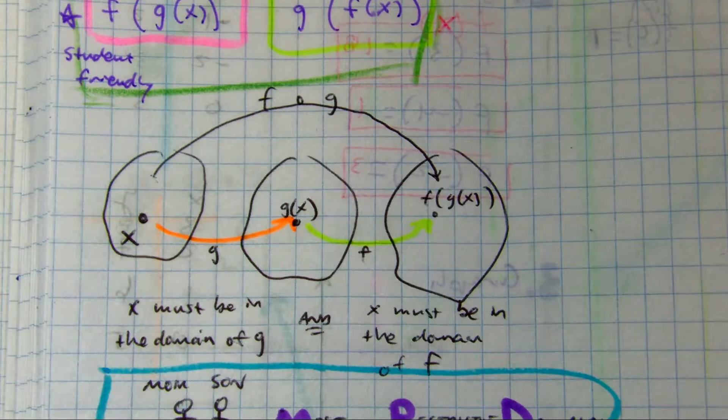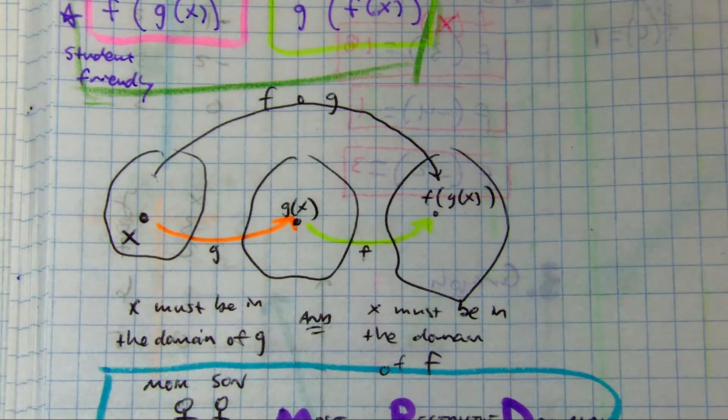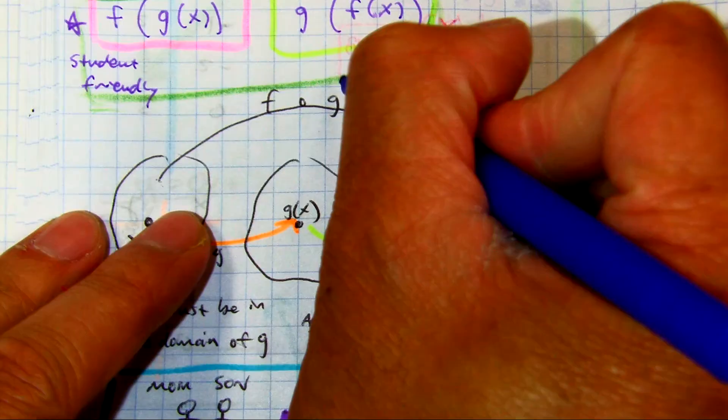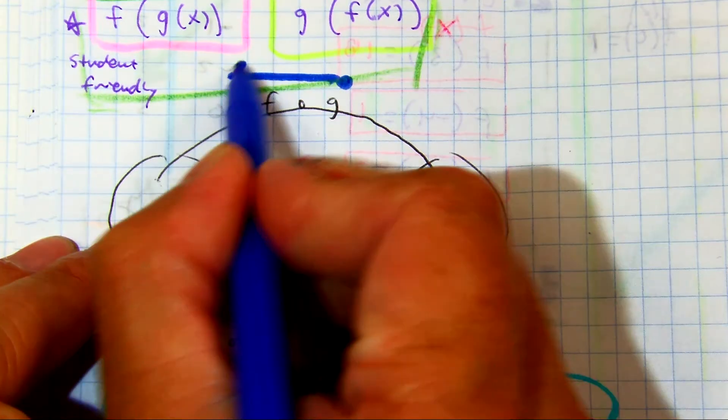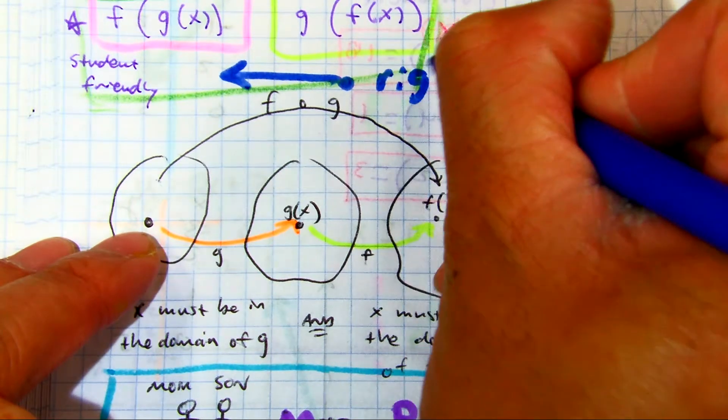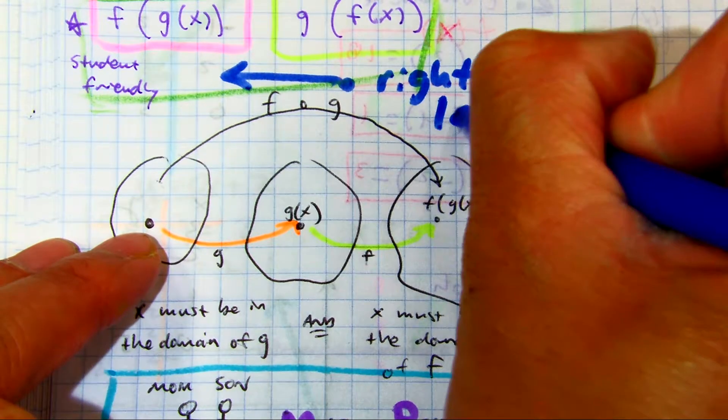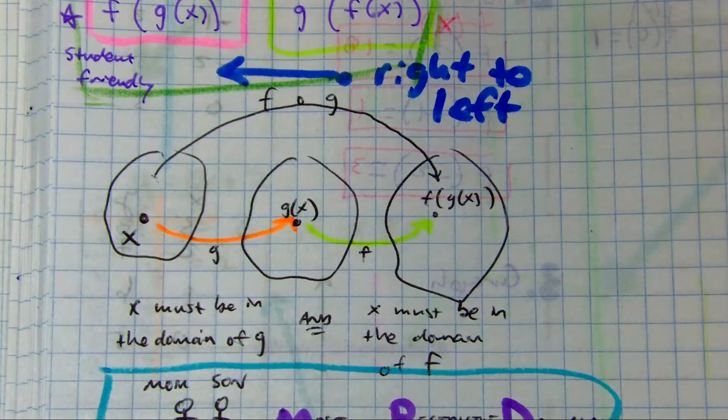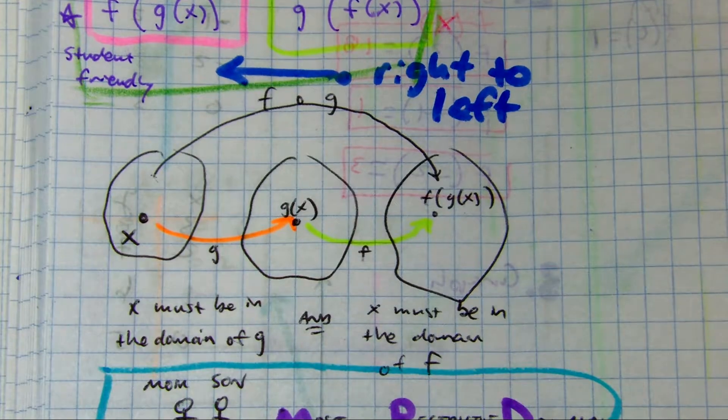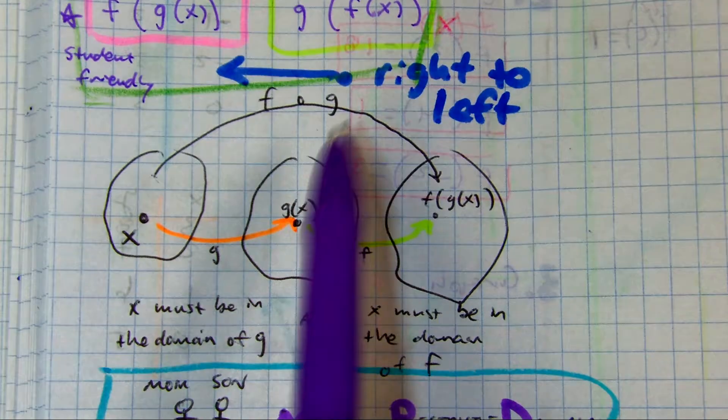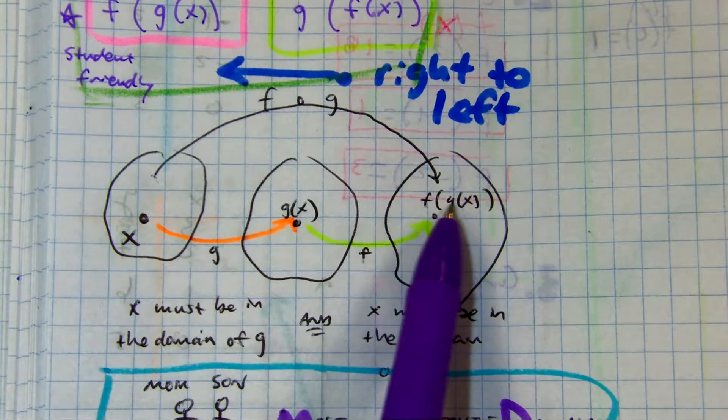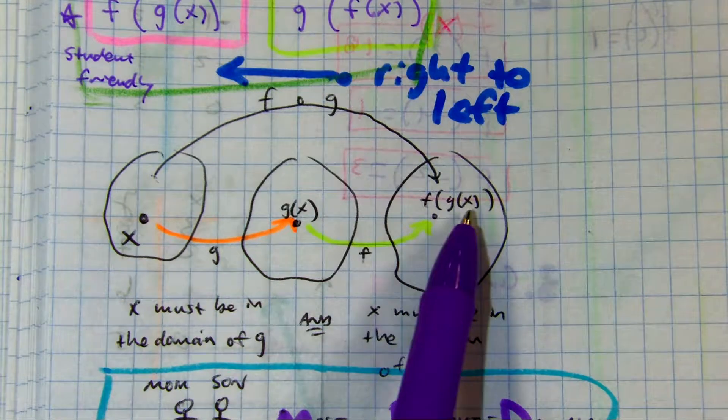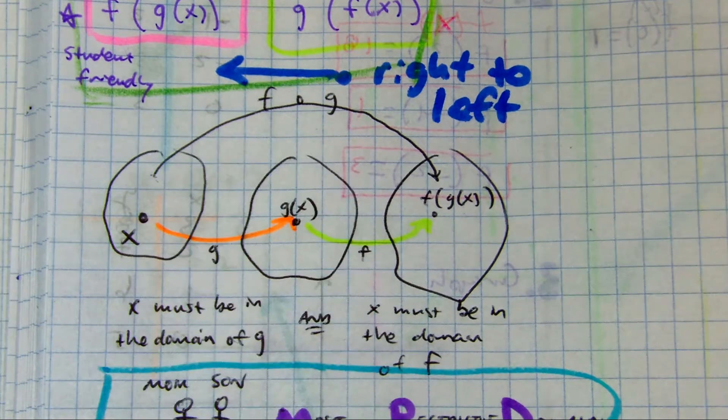Everyone say right to left. Right to left. So even though in English, I know most of the time in math too, we're going left to right, but you kind of work with the function g first. You see how it's kind of like in the inside? You do that one first and then you do the f.